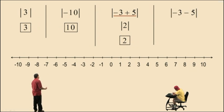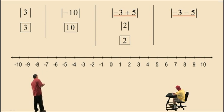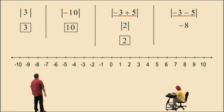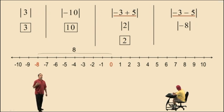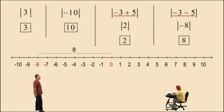Here we have the absolute value of negative 3 subtract 5. Notice we have an expression within the absolute value, so we must simplify that expression first. Negative 3 subtract 5 is negative 8. And the absolute value of negative 8 — negative 8 is 8 units to the left of 0 on the number line, and therefore the absolute value of negative 8 is positive 8.